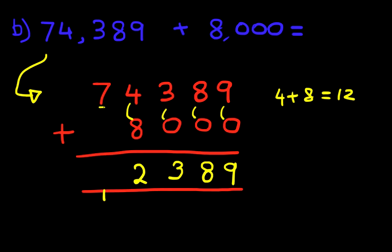And finally, we're going to add the ten thousands. We've got 7 here plus 0, but don't forget the 1 here. 7 plus 1 is? 8. And we have our answer. It is 82,389.